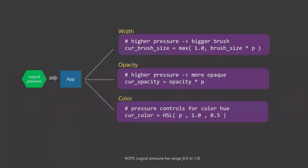Digital art applications like Krita or Clip Studio Paint take logical pressure and compute things about your brush strokes, like width, opacity, or color. In this video, I will only show you how these applications take the pressure and apply it to the width of the stroke. But everything I'm saying fundamentally applies to opacity or color as well. The reason I'm talking about width is because it is much easier to show and discuss the effect on the stroke.